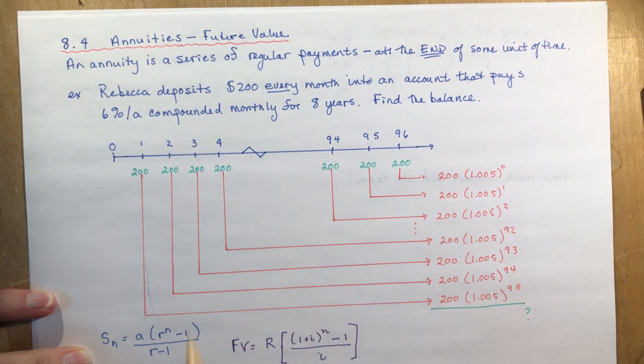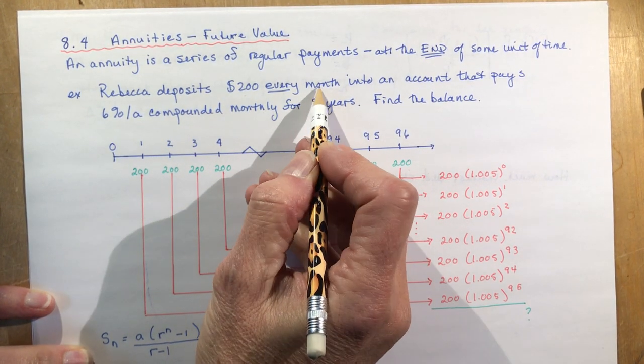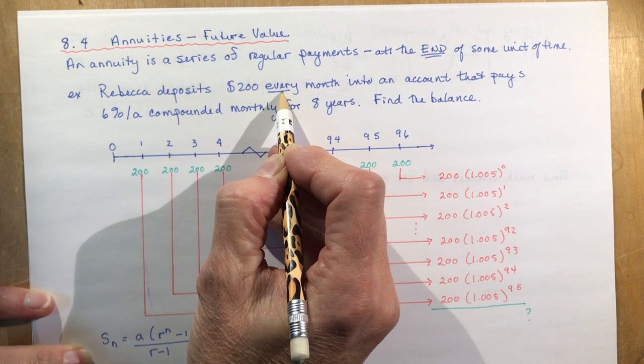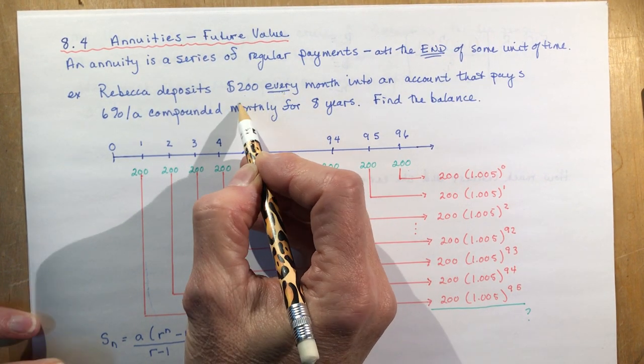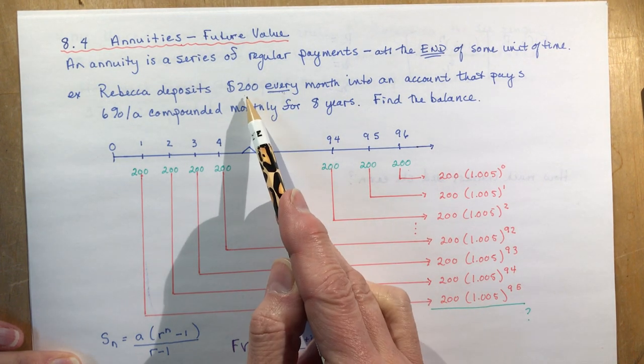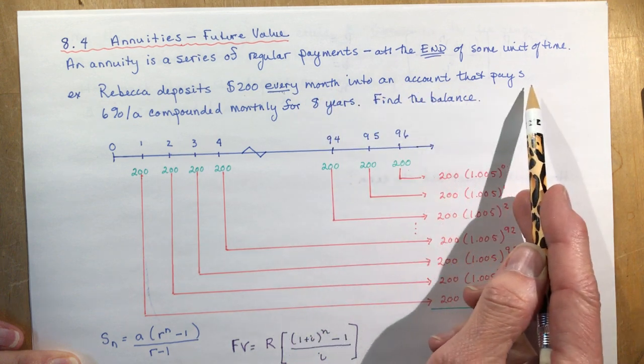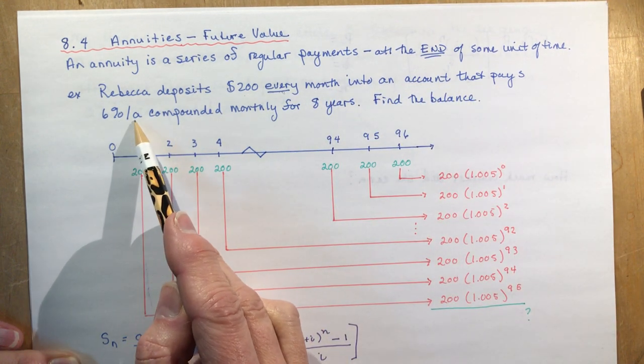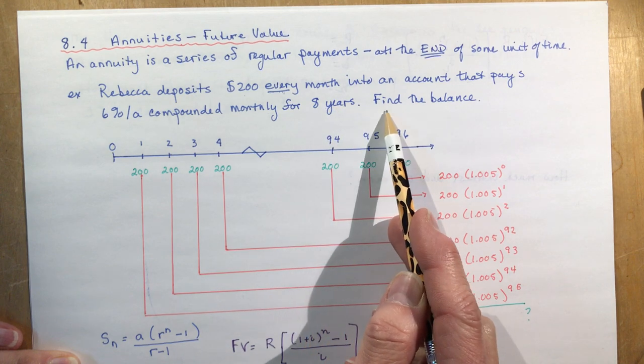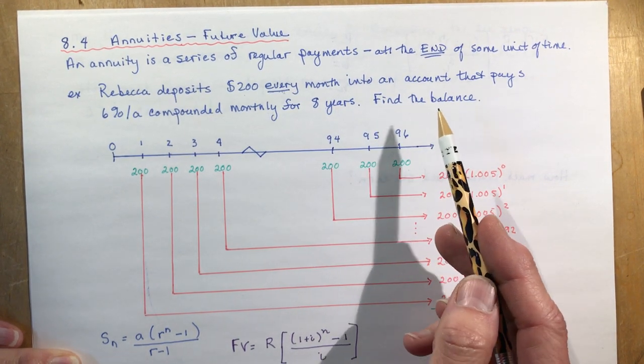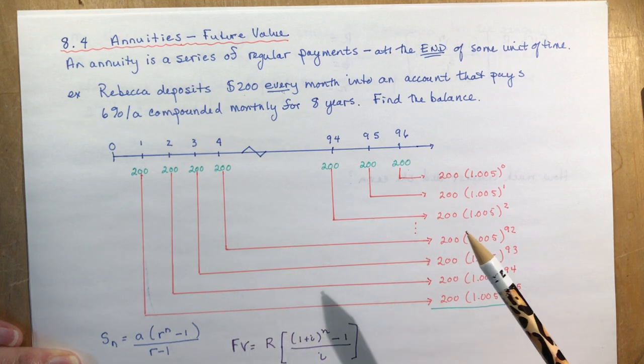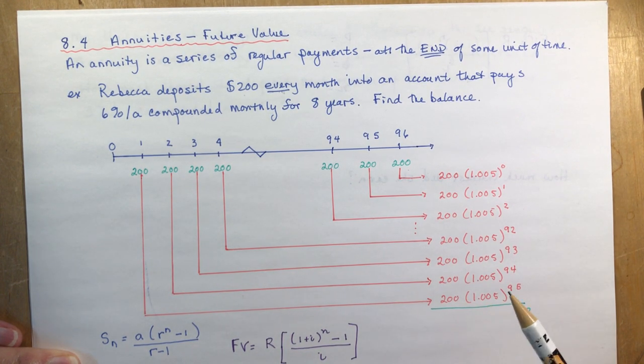In this example, Rebecca deposits $200 every month. You see this word 'every,' you know it's a payment being made more than once. She's not just putting $200 in the bank and leaving it there. She's doing it every month into an account that pays 6% per annum, compounded monthly for eight years. Find the balance. Your textbook shows different timelines and I think it's a good way to present it the first time. After that, you should be able to just use the formula.